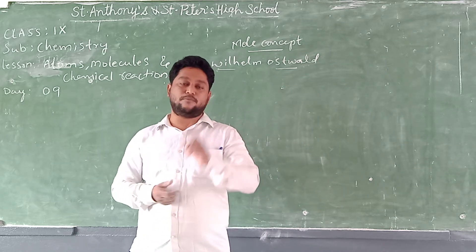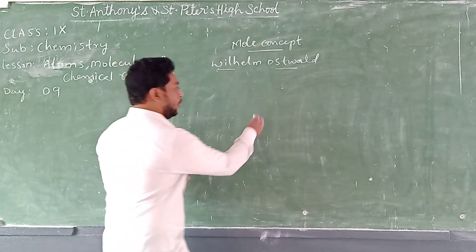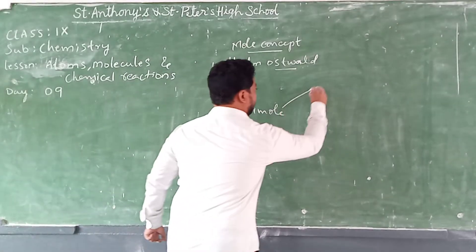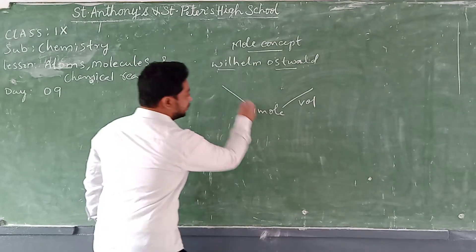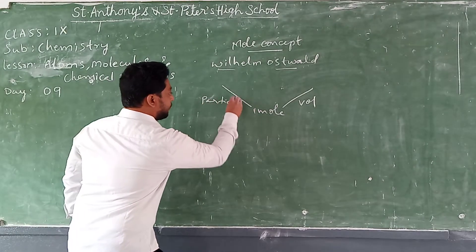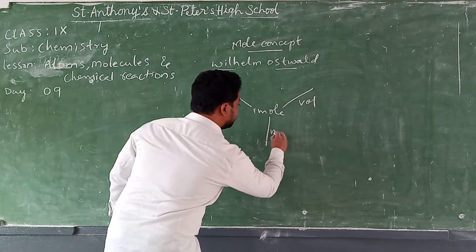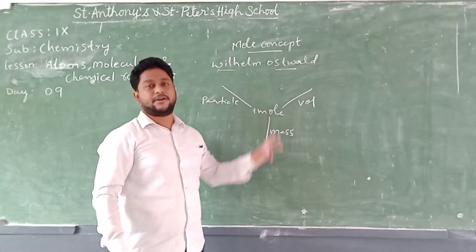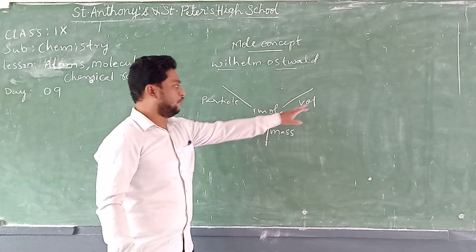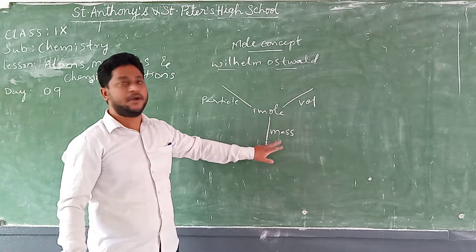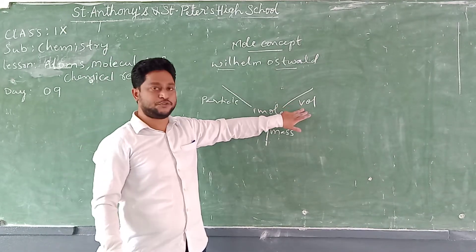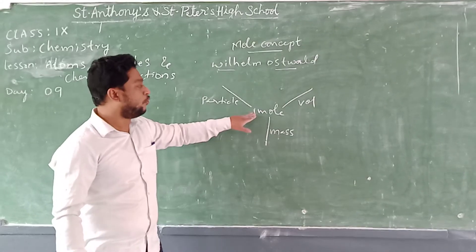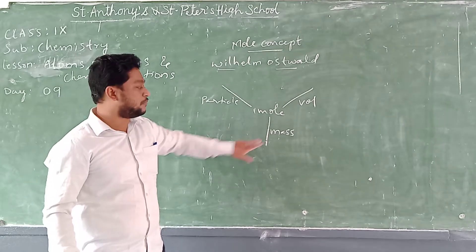One mole of any substance is expressed in three categories: volume, particles, and mass. One mole of any substance occupies a certain volume, contains a certain number of particles, and has a certain mass. In terms of mass, this can be further categorized into three parts.